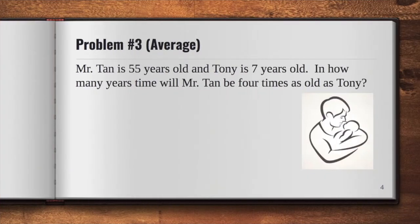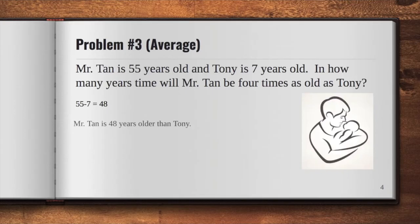This time, let's try solving a more challenging question. Mr. Tan is 55 years old and Tony is 7 years old. In how many years' time will Mr. Tan be four times as old as Tony? In this problem, it will be easier if we get the age gap of Mr. Tan and Tony first. And to get this, we just have to subtract: 55 minus 7 equals 48.